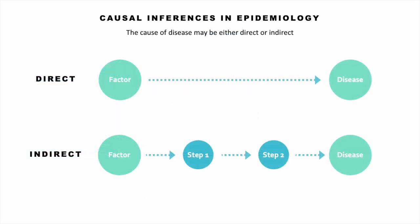The cause of disease can be either direct or indirect. In a direct relationship, the factor causes the disease directly. For an indirect cause, there's a pathway with one or more steps that lead to the development of disease.